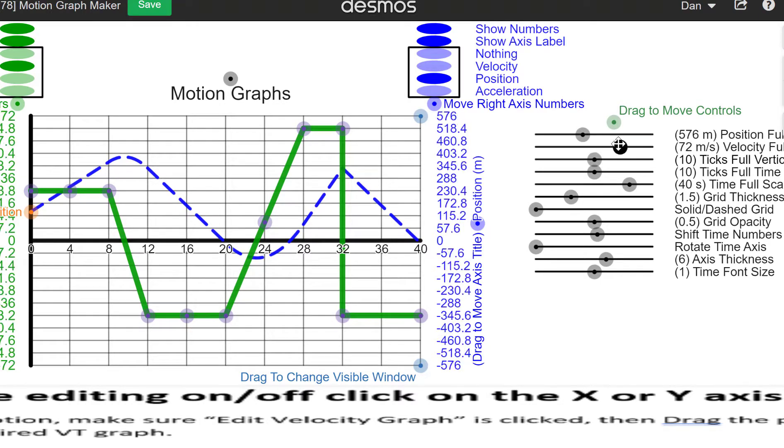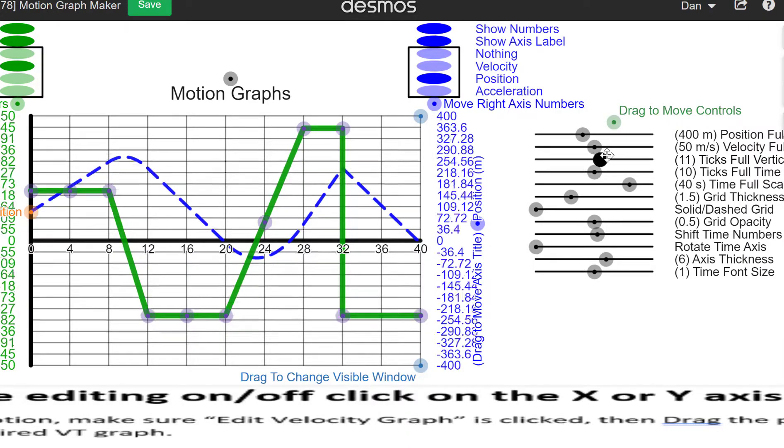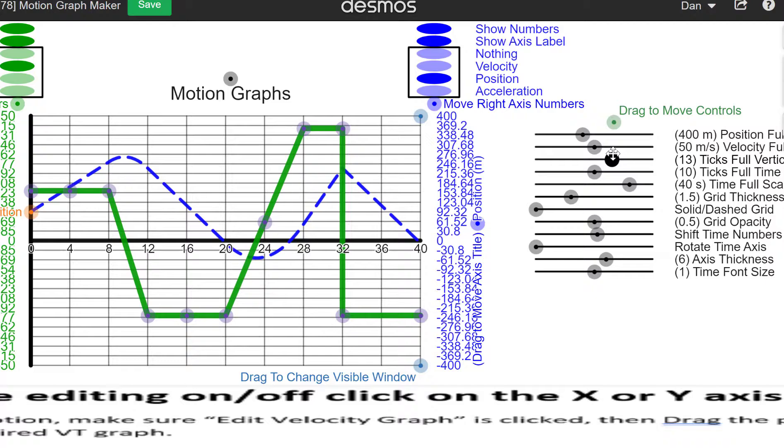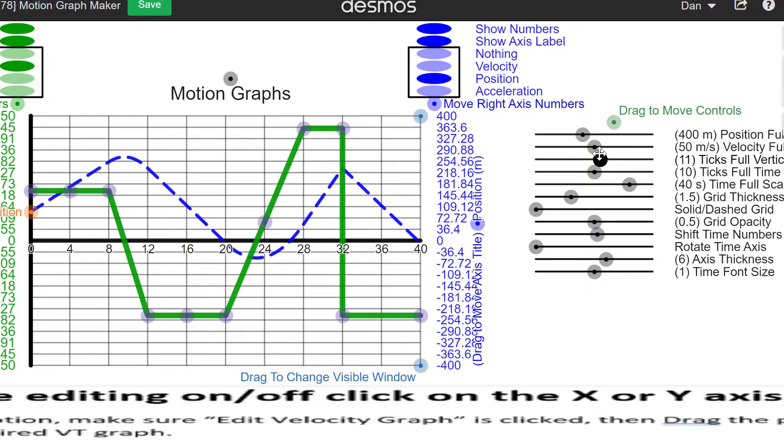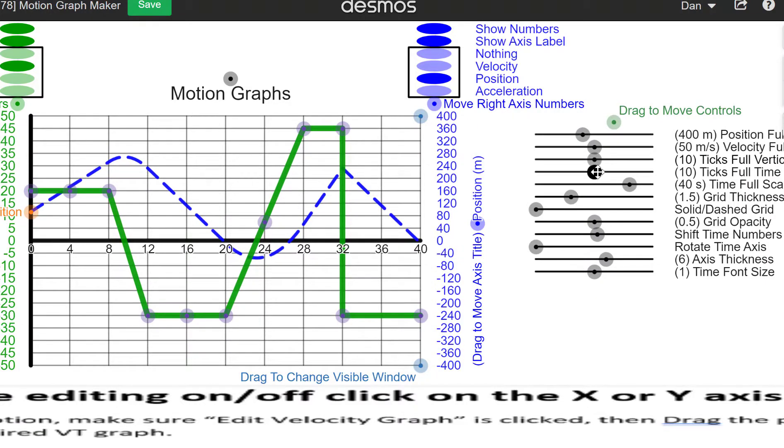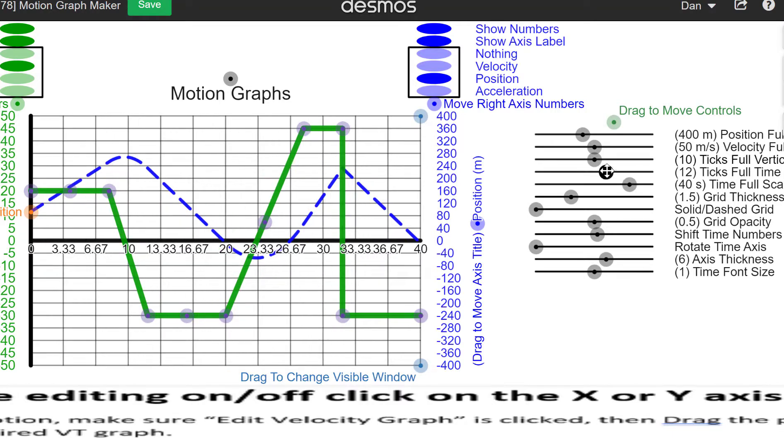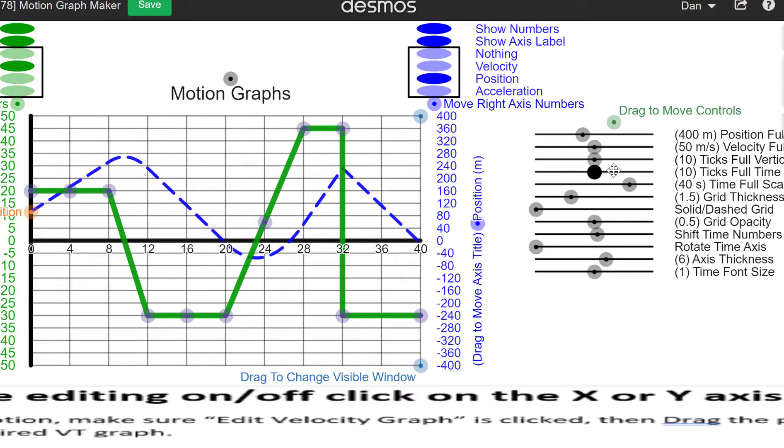Same thing for the velocity. You can change the velocity scale, so it'd be the same exact shape of graph but different numbers. You can change the number of tick marks, here, both for the vertical axes and for the time axes.